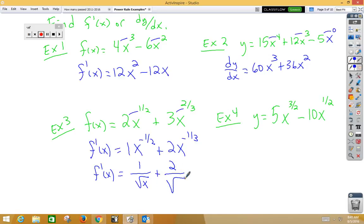In my last example, dy dx is equal to, multiply 5 times 3 halves, that would be 15 halves, x 3 halves minus 1 would be 1 half, and then half of 10 is obviously 5x to the negative 1 half.